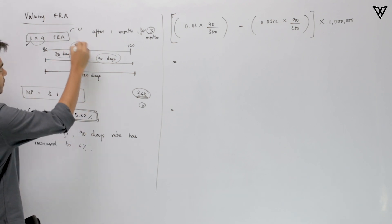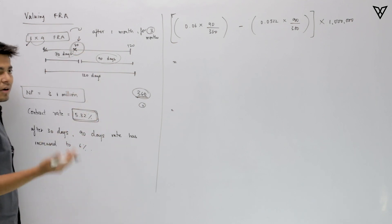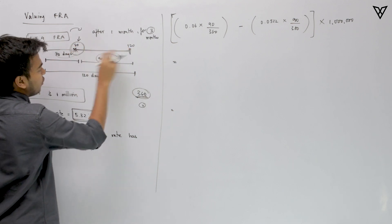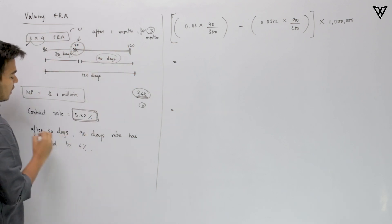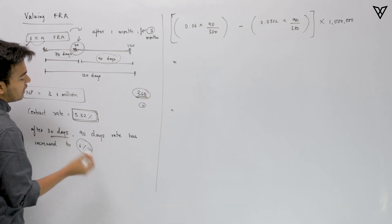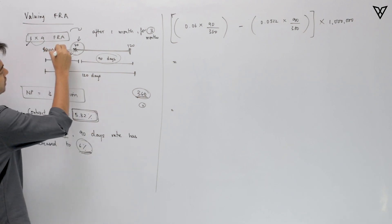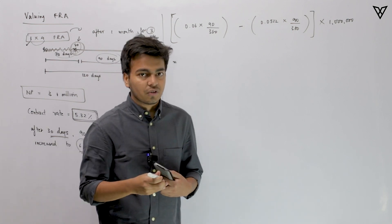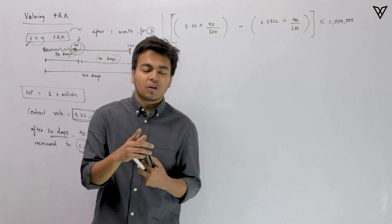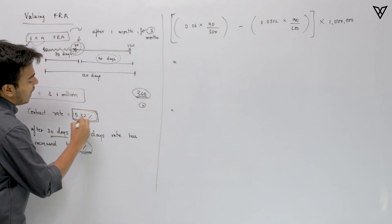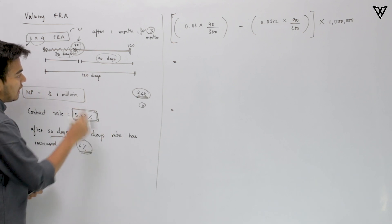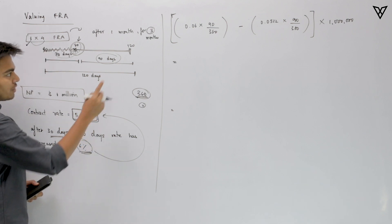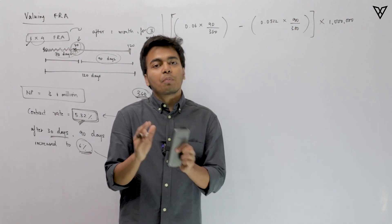Now, when we reach the 30-day mark, we can determine whether the long party or short party is gaining, because we now know the prevailing rate for the next 90 days. Say the 90-day rate has increased to 6%. Who is winning? Definitely the long party, because they agreed to borrow at 5.32%. Had they not entered this contract, they would have had to pay 6%.